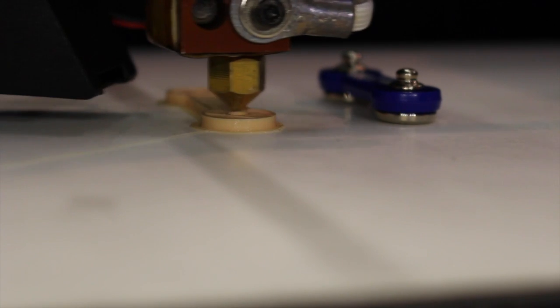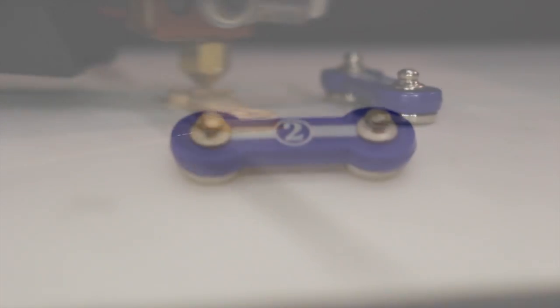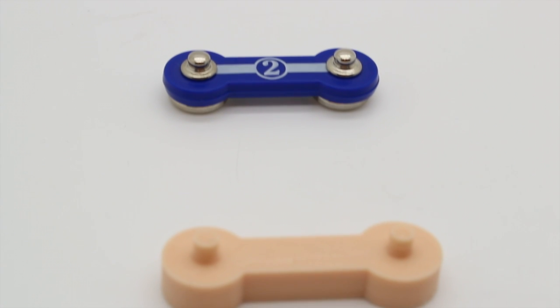Then we printed that 3D model using regular PLA to test it out. Once we confirmed it was the right size, we went ahead and got our conductive filament and printed out a new connector.